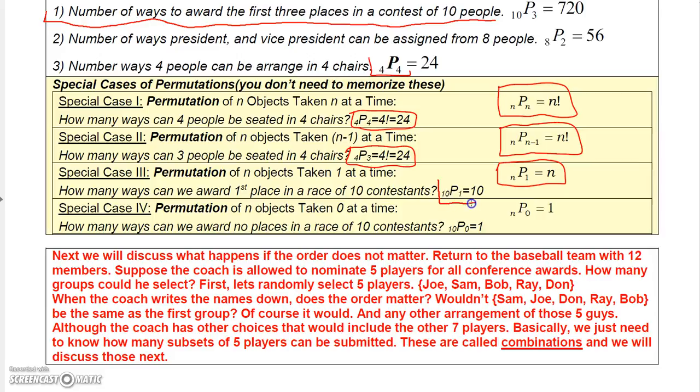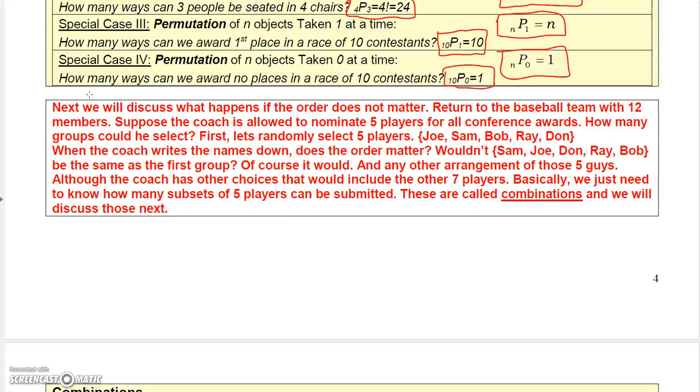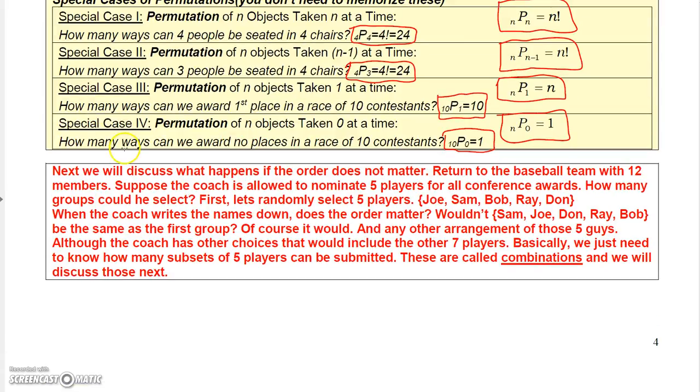There's another way to award. nP1 is always n. It's kind of a silly question to ask, but if ten people were running a race and you wanted to know how many ways you could award only the first place position, there would be 10, because each person could possibly win first place. And nP0 is always one. Out of ten places, how many ways is there to award no awards? Well, there's one way, just don't award anything.